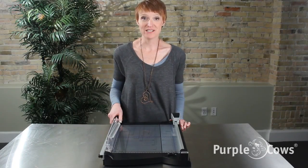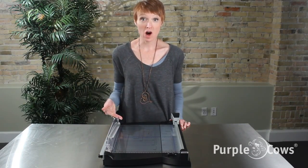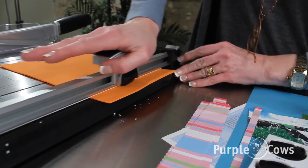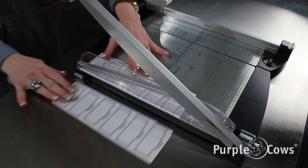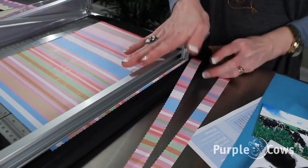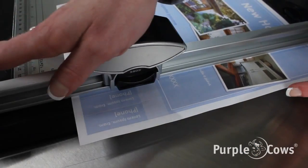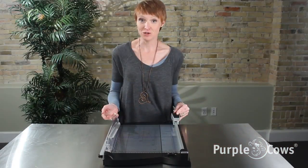I'm Paula from Purple Cows and this is our two-in-one combo trimmer. By combining the precision of a rotary trimmer and the power of a guillotine, the Purple Cows two-in-one trimmer is a versatile cutting tool that's perfect for crafting, scrapbooking, home and office use.